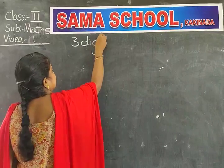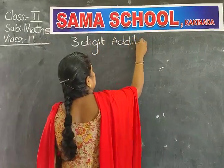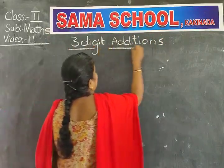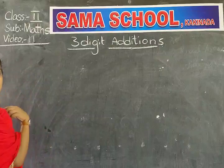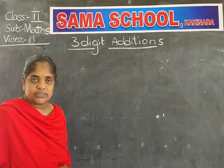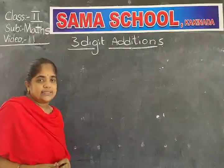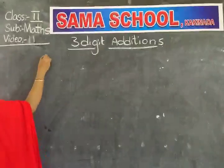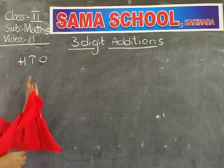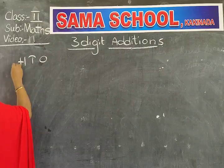Three-digit additions. How we did the one-digit addition, how we did the two-digit additions, and how we will do the three-digit additions — we will learn now. These are the place values: ones, tens, and hundreds.